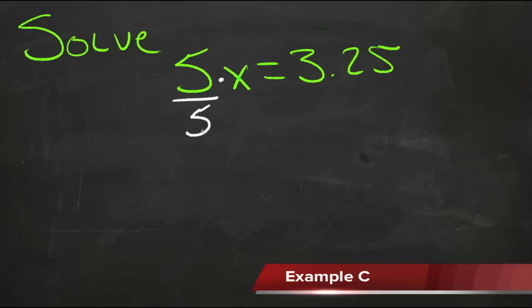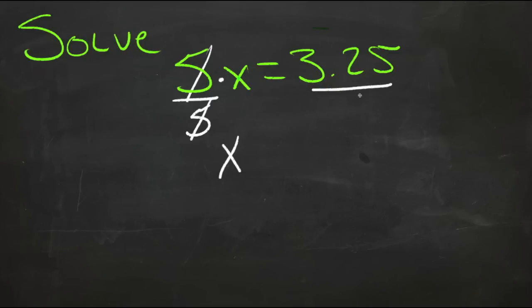So we'll divide this side by 5. 5 divided by 5 is 1, so that gives us just 1x on that side, that's what we wanted. Then the other side we need to divide by 5 also. 3 and 1 quarter divided by 5 is .65.